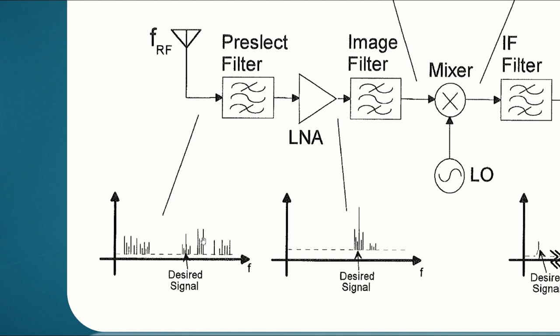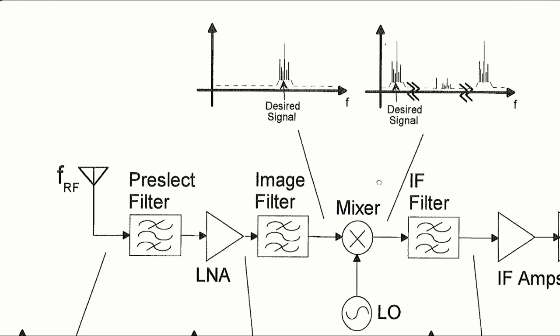And the job of the pre-select filter is to eliminate as many of those as possible, especially like these strong ones over here, before they hit the low noise amplifier. And so if this filter is doing its job, it does that. In fact, it gets rid of these lower frequency ones and the higher frequency ones. The ones that are right here, some of those got through. But that's okay because there's another filter after that, before the mixer, called the image filter. And by that time, we've gotten rid of everything except the desired broadcast band.